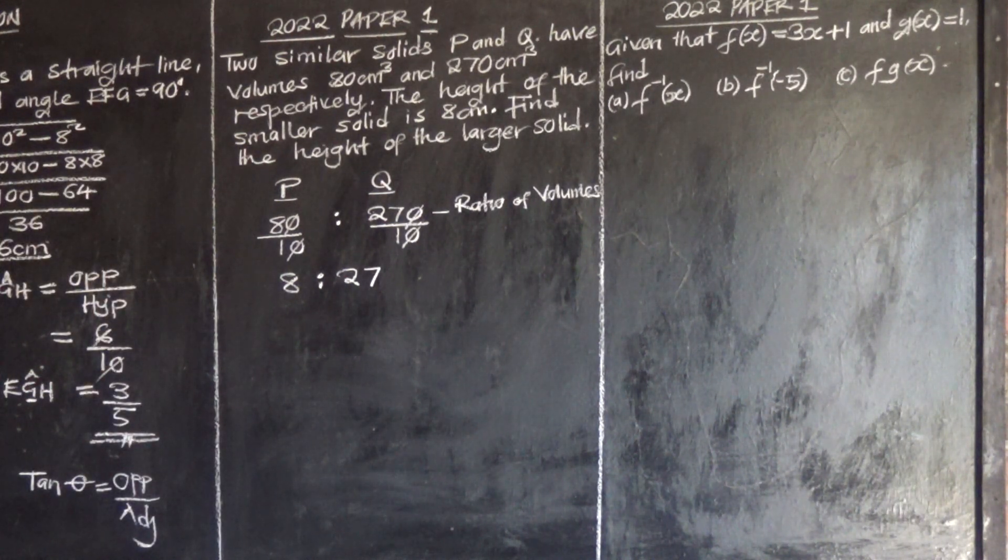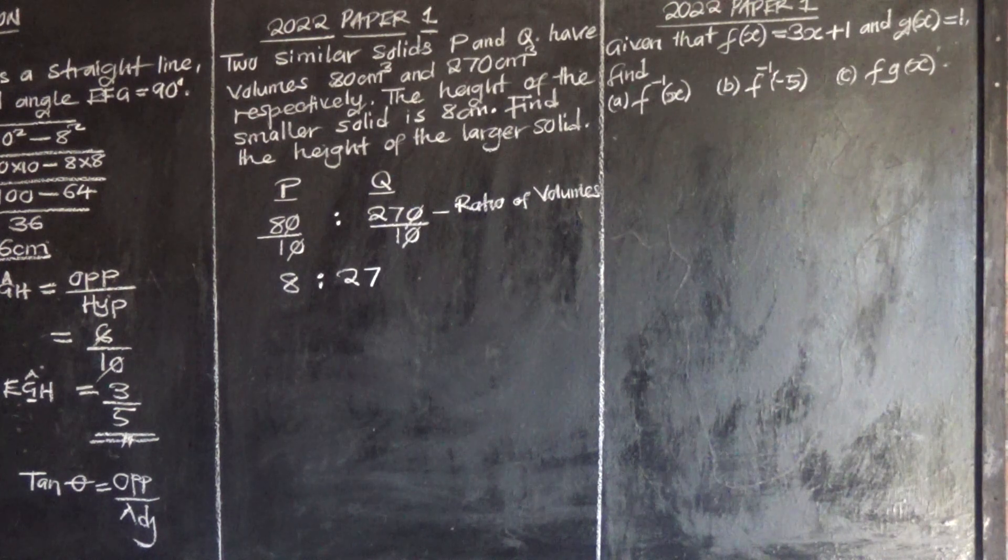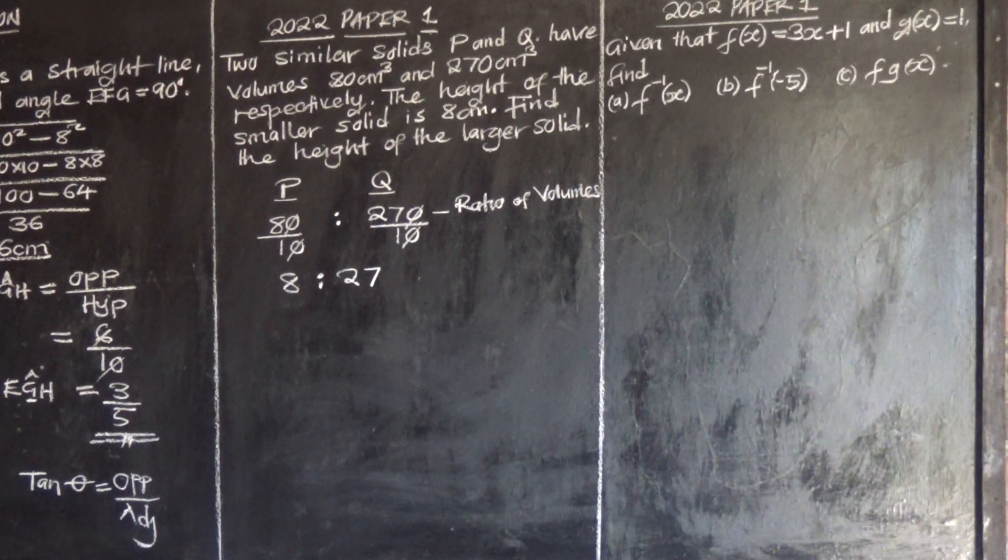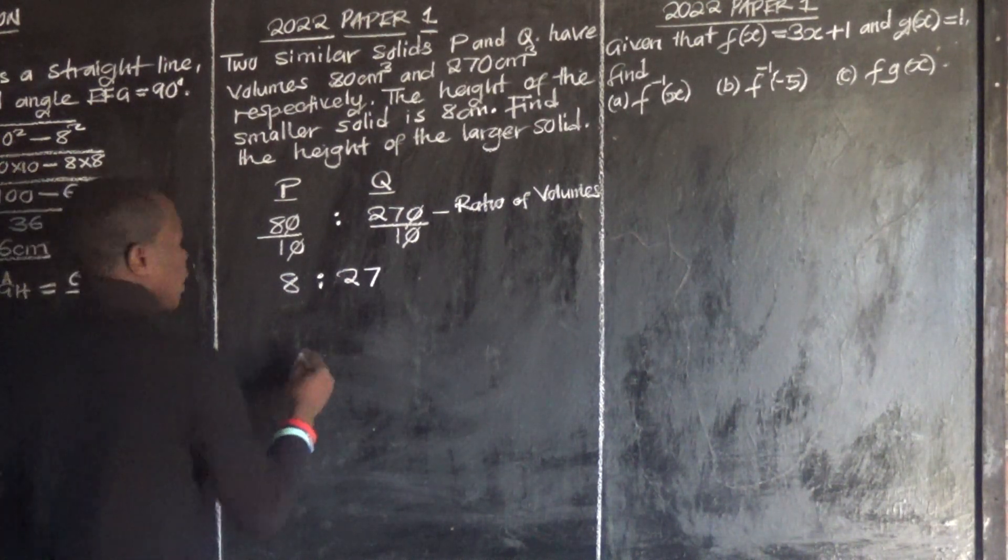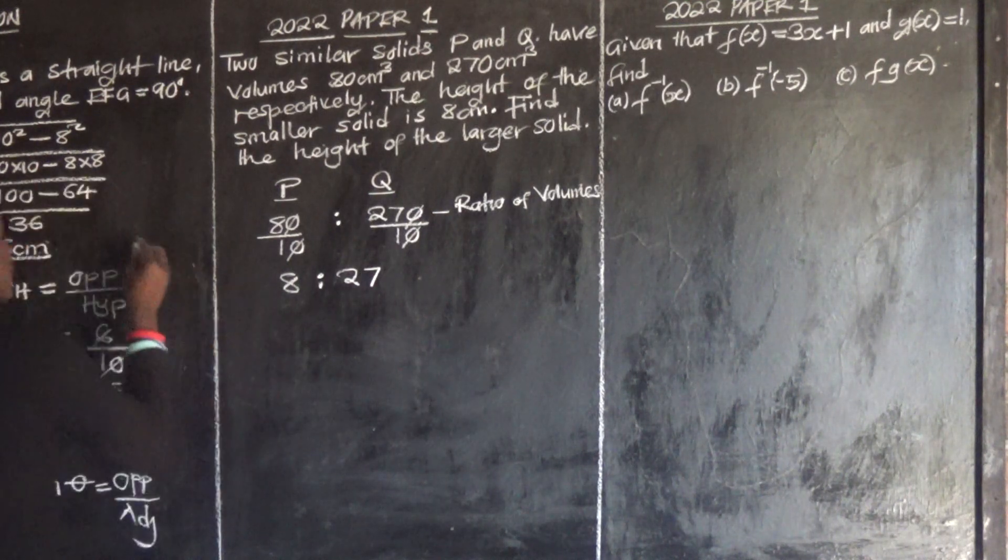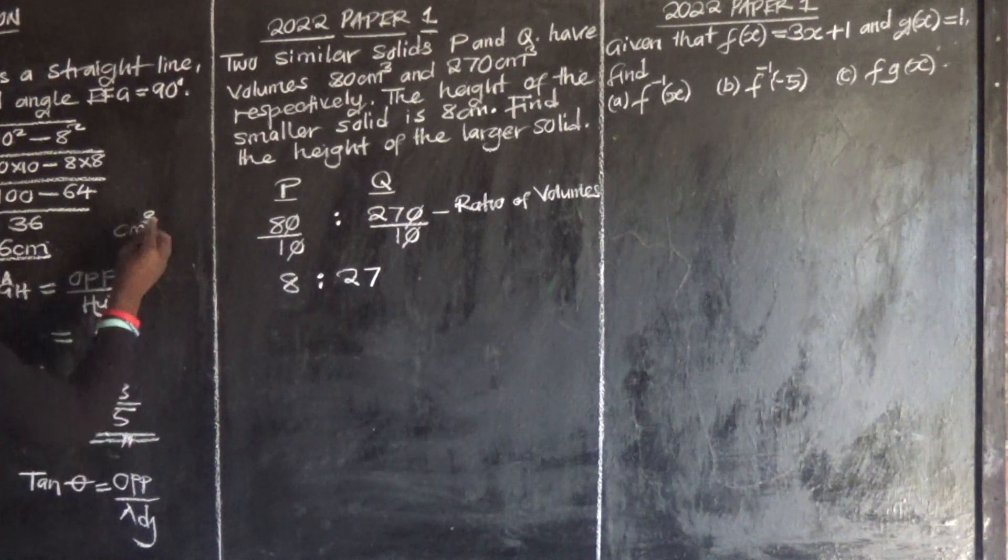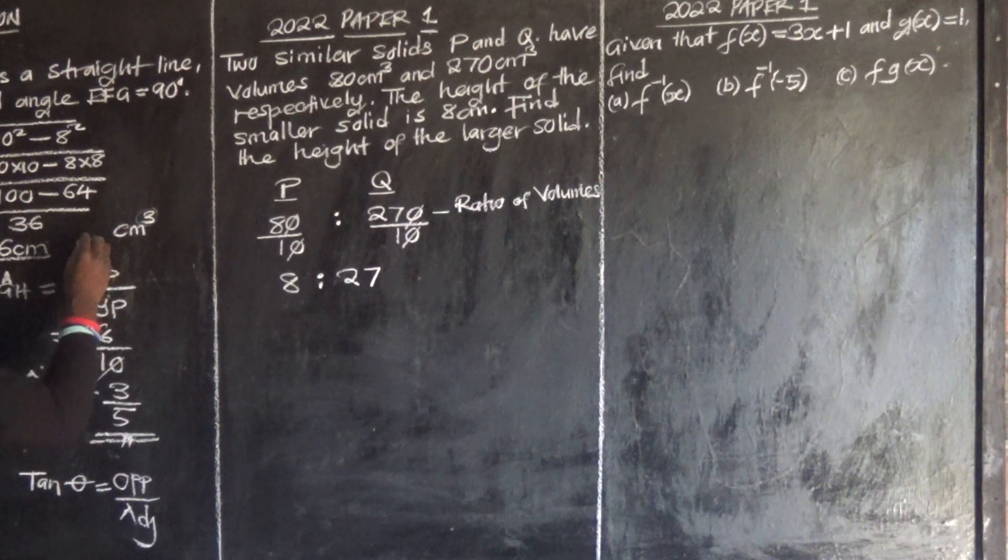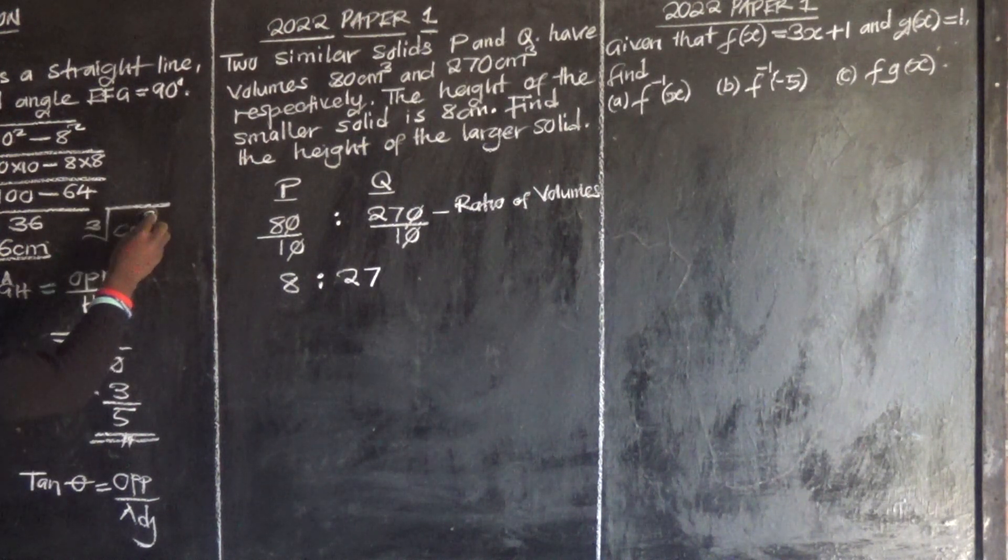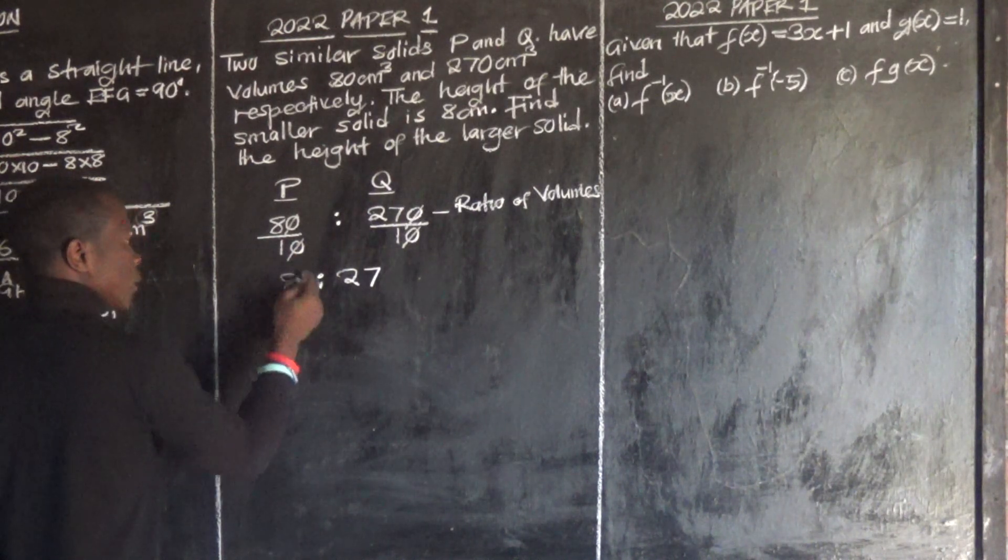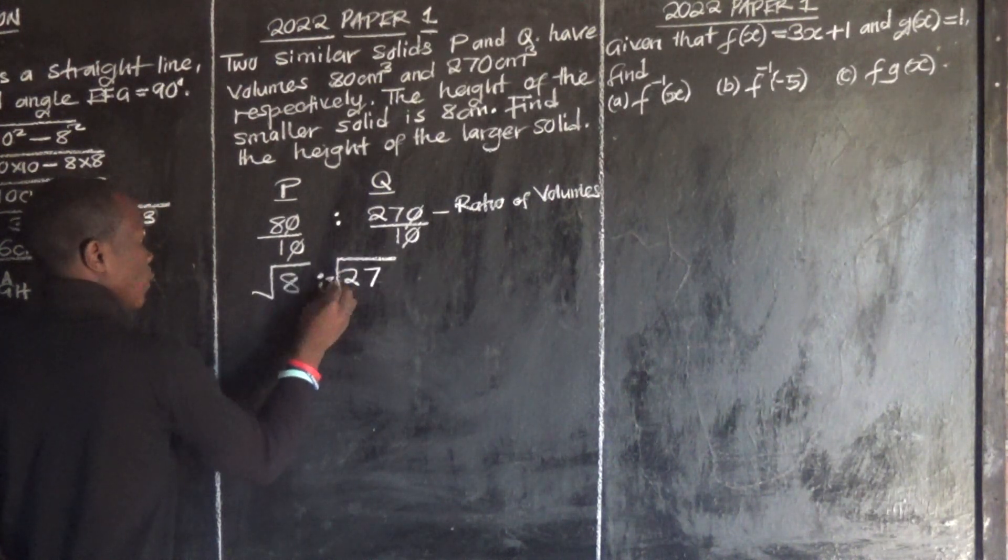Now since this is the ratio of volumes, what we are going to do is find the actual ratios. If we have volume and we want to remove this cube, what do we do? Introduce the cube root. So to find the actual ratio, we introduce the cube root on both sides.